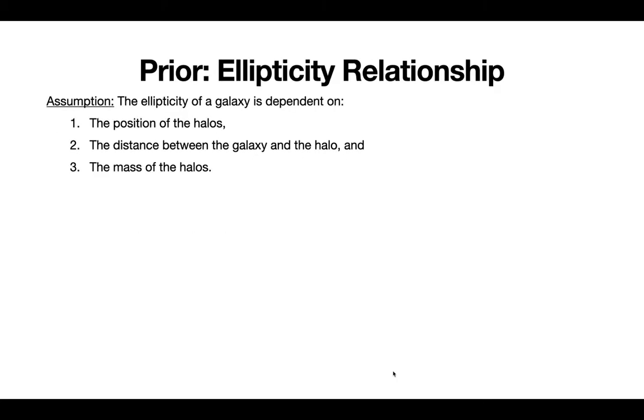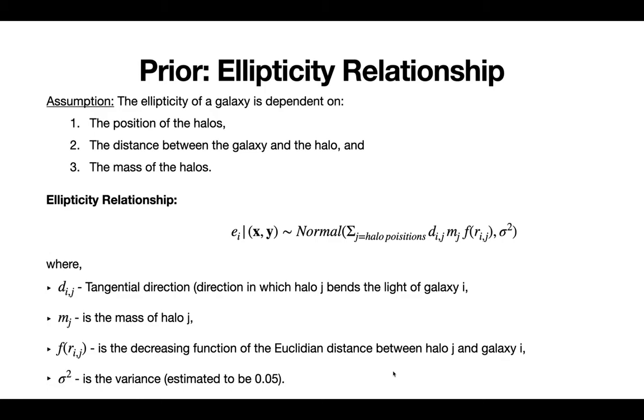So the prior, the ellipticity relationship that we need, requires an assumption, which is that the ellipticity of the galaxy is dependent on three things: the first is the position of the halos, the second is the distance between the galaxy and the halo, and the third is the mass of the halos. So we can create this ellipticity relationship that we will use to predict the halo positions.